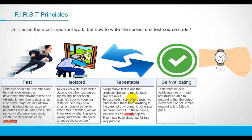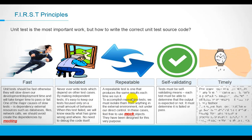The last principle is timely. You can write unit test cases at any time — you can append them after the production code is ready, or you are better off focusing on writing unit tests in a timely fashion. As a suggestion, you should have guidelines or strategy rules around unit testing. You can use review processes or even automatic tools to reject code without sufficient tests.